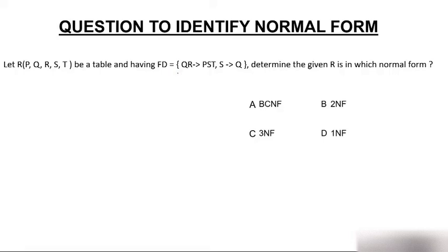In this type of question, you need to identify the candidate key first. Let's use an arrow diagram to find the candidate key. QR is determining PST — that is, P, S, and T — and S is determining Q.